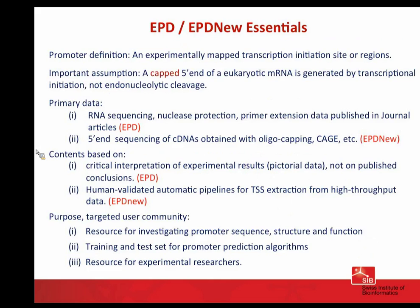The contents of the old database were based on a critical interpretation of published results — mostly pictorial results — and never on published conclusions. Likewise, EPD New is based on independent processing of public high-throughput data. The purpose and targeted user community: it's primarily a resource for researchers who would like to investigate promoter sequences, structure, and function. It has been used as a training and test set for developing and testing promoter prediction algorithms, and it is also a resource for experimental researchers who just want to know more about a particular promoter.